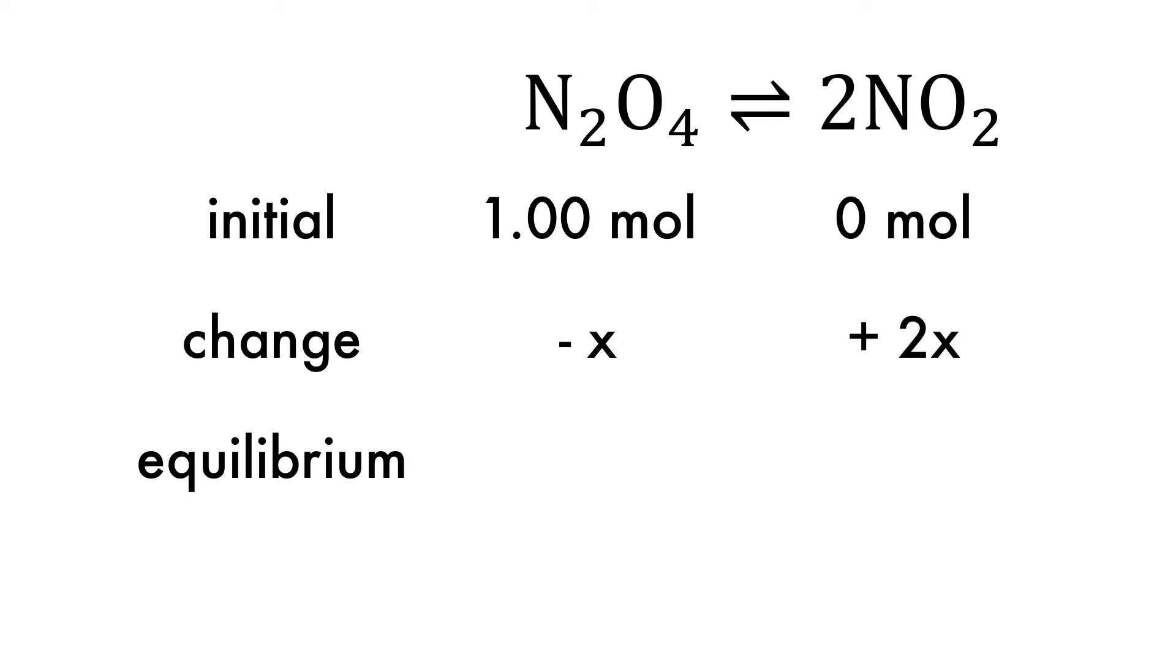The total change in concentration is unknown at this point, and so it is represented as x, negative x for the reactant because it is being used up to reach equilibrium.